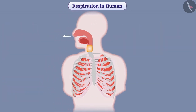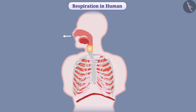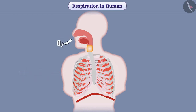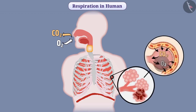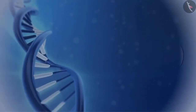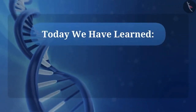While exhaling, the diaphragm becomes dome-shaped, causing the ribs to come down and the chest cavity to become smaller, so air comes out of the lungs. In the process of inhaling and exhaling, a residual volume of air remains inside the lungs. In this way, there is sufficient time for absorption of oxygen and release of carbon dioxide in the alveoli. So today we learned about respiration.